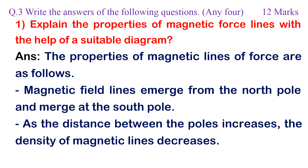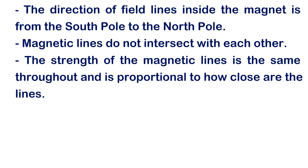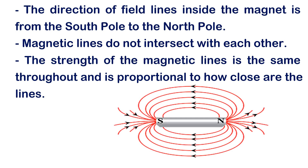Question 1: Explain the properties of magnetic force lines with the help of a suitable diagram. Answer: The properties of magnetic lines of force are as follows. Magnetic field lines emerge from the north pole and merge at the south pole. As the distance between the poles increases, the density of magnetic lines decreases. The direction of field lines inside the magnet is from the south pole to the north pole. Magnetic lines do not intersect with each other. The strength of the magnetic lines is the same throughout and is proportional to how close the lines are.